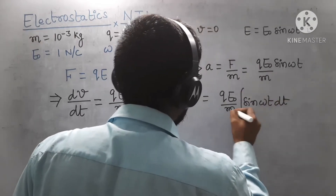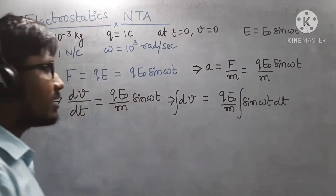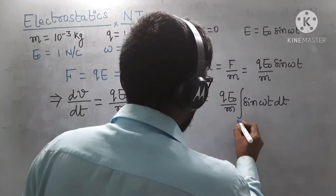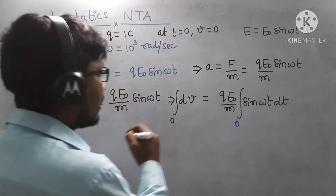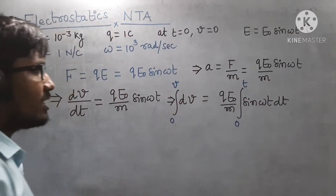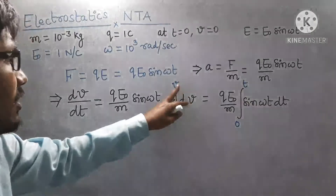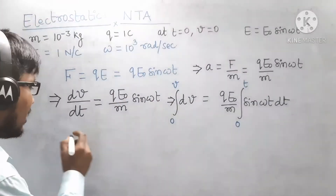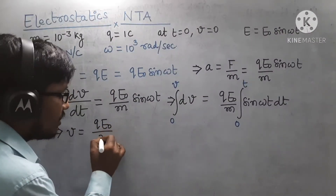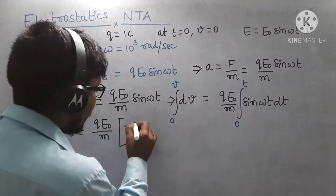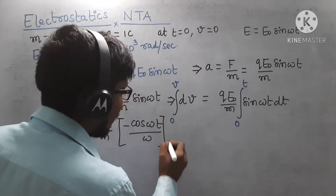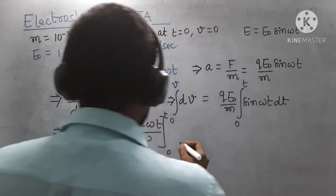Now I am integrating both sides. QE₀/m is a constant, so it can be taken outside the integration sign. For limits: at t = 0 the velocity was 0, and at any general time t the velocity is v. Integrating, dv gives v, and the integral of sin(ωt) dt gives −cos(ωt)/ω, with limits 0 to t.